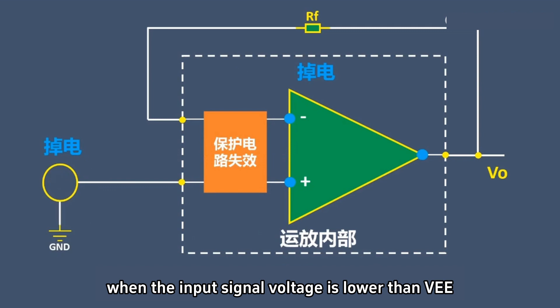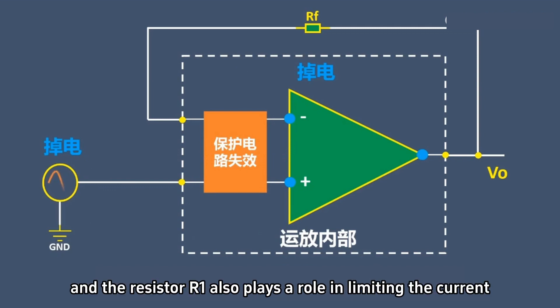Similarly, when the input signal voltage is lower than VE, the lower diode conducts, and the resistor R1 also plays a role in limiting the current.